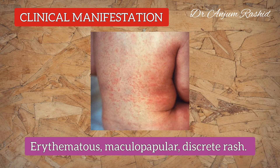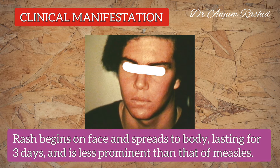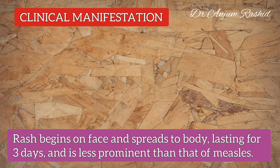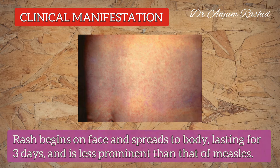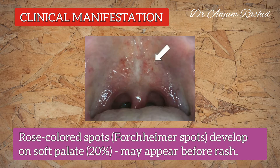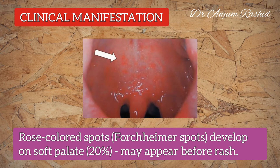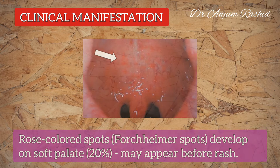Lymphadenopathy is accompanied by an erythematous maculopapular and discrete rash. The rash begins on the face and spreads to the rest of the body, lasting about three days, and it is less prominent than that of measles. Rose-colored spots also occur on the soft palate in about 20 percent of patients and may appear before the rash; these spots are known as Forchheimer spots.